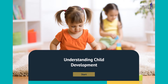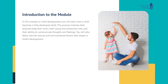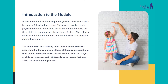Understanding child development. In this module on child development, you will learn how a child becomes a fully developed adult. This process involves their physical body, their brain, their social and emotional lives, and their ability to communicate thoughts and feelings. You will also delve into the natural and environmental factors that impact a child's development.